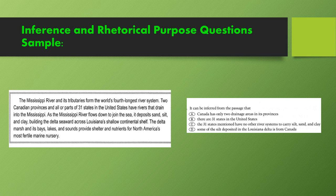Option B: 31 states out of all the states in the United States have rivers that drain into the Mississippi. Option C: If only parts of some states have rivers that drain into the Mississippi, there are probably other rivers in other parts of those states that drain elsewhere.